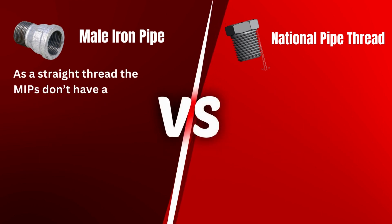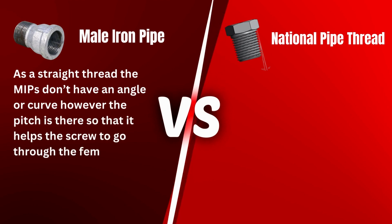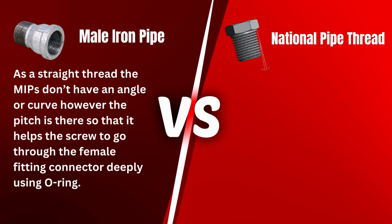As a straight thread, MIP doesn't have an angle or curve; however, the pitch is there so that it helps the screw go through the female fitting connector deeply using an O-ring.